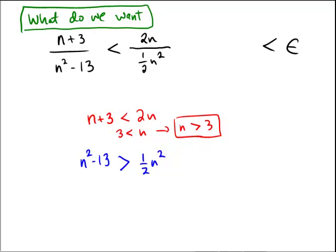So for the blue, if we subtract n squared over to the left-hand side, we'll get 1 half n squared. Add 13 over to the right-hand side. Multiply by 2. And it looks like, if we just take a square root here, we need n to be larger than radical 26.